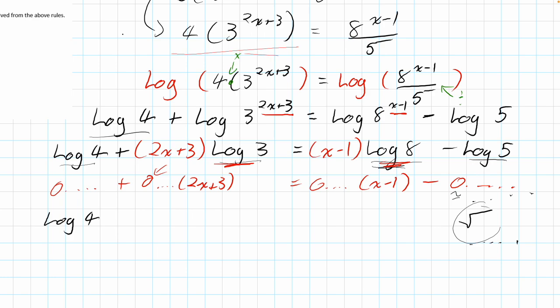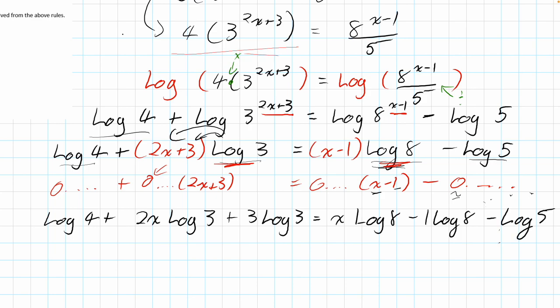So, we have log 4. This is distributed property. I can distribute these two things. So, this becomes 2x log 3. And we could say plus 3 log 3 is equal to x log 8 minus 1 log 8 minus log 5. Now, at this point, I've got to really try to keep track of my goal. My goal here is to isolate this x somehow. I've got to get them by themselves.